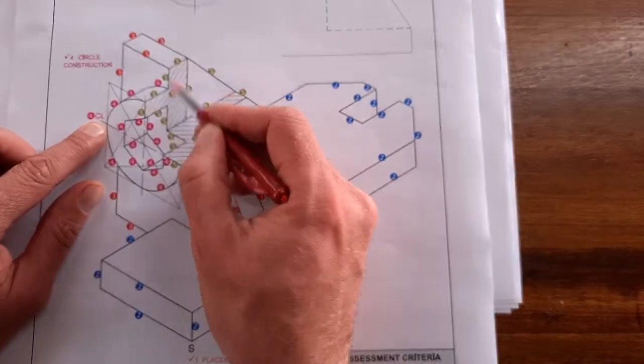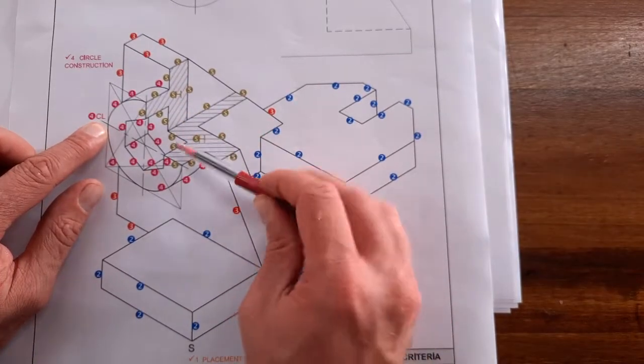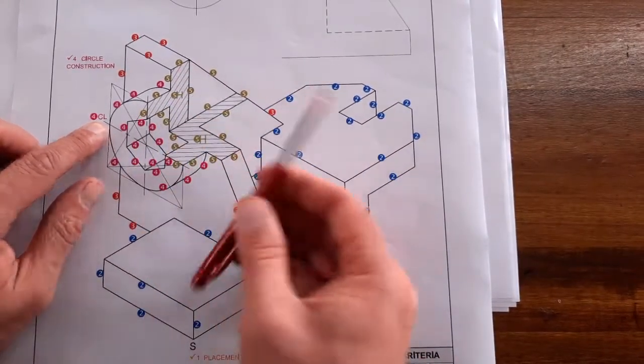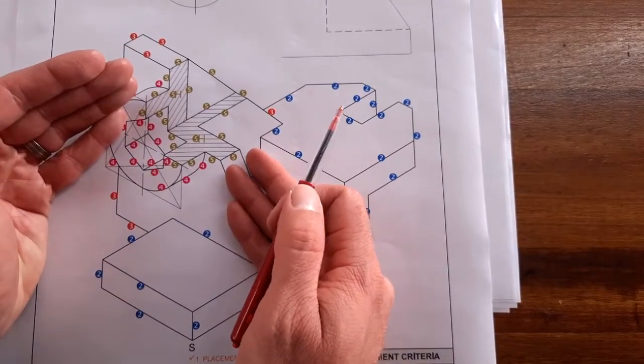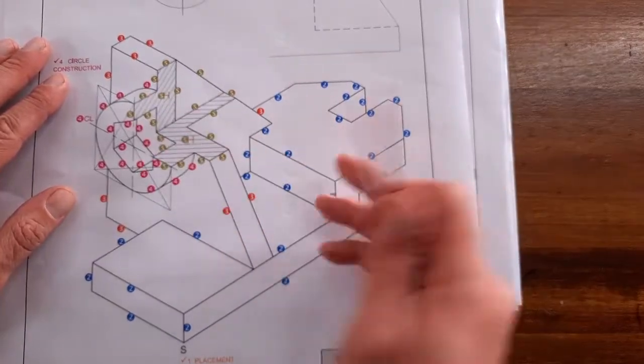Then your hatching. Make sure the hatching, as your section changes, the direction of that hatching changes, although this is a casting. The direction will still change because it's a half section here. Lots of detail. The only way you're going to be drawing these drawings is if you practice them.